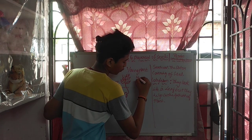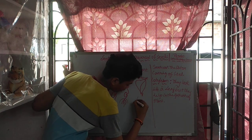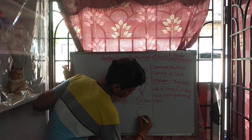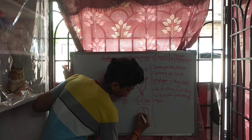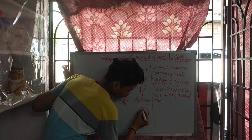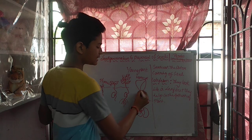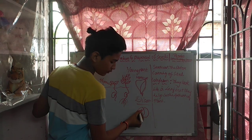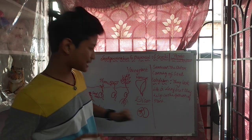We will see the diagram of monocot and dicot. Here only one leaf is present, so this is monocot. Here one, two — two leaves are present, so this is known as dicot.